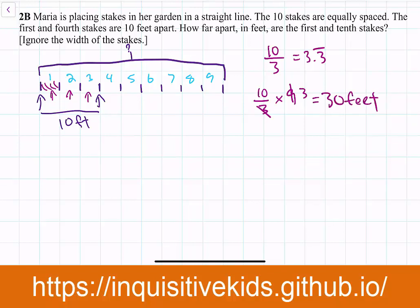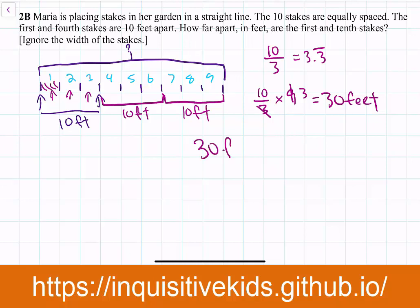For those of you who haven't learned fractions, improper fractions, or division yet, you can still do this problem. This problem is for students in elementary school, and you can use the math you learned in your average school. If you don't know how to work with fractions, you can think of it like this: group the spaces into groups of 3, and you know that each group of 3 is 10 feet apart. When you add them together, again you get 30 feet. So you will get your answer.